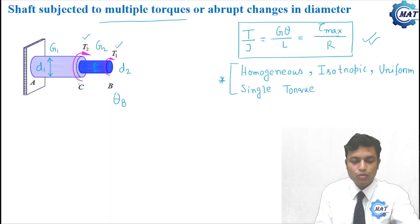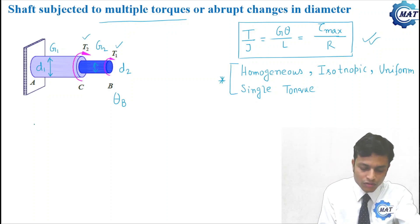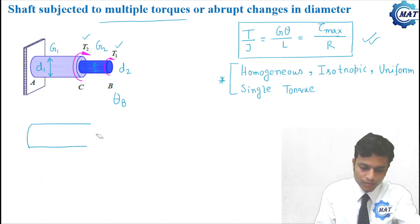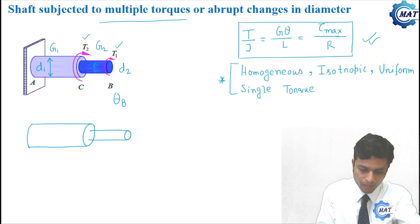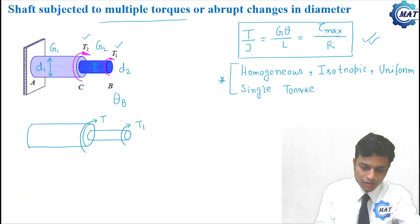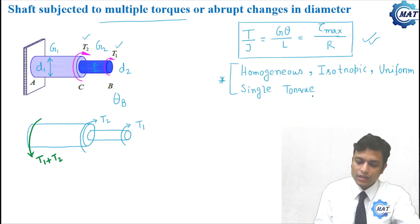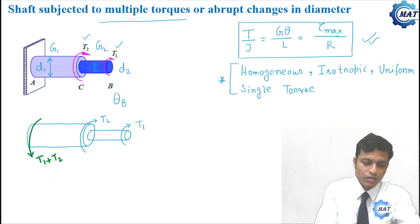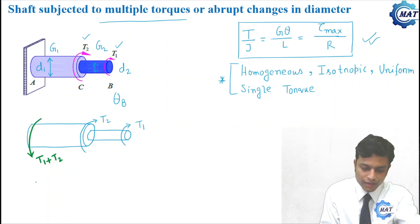We will divide the compound shaft into two parts. First, let us draw the free body diagram of the entire shaft. The applied torques are T1 and T2, so the reaction torque will be T1 plus T2. To satisfy the limitations of the equation of torsion, we shall divide the shaft into two parts.